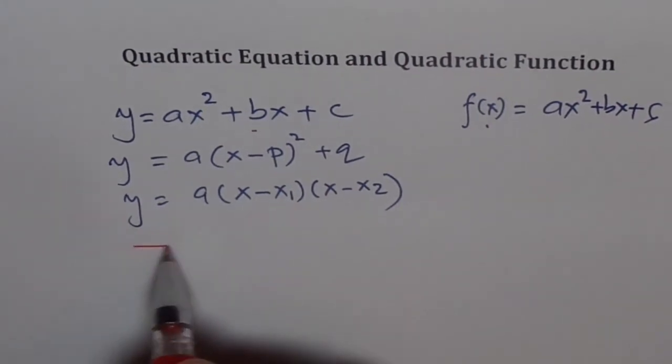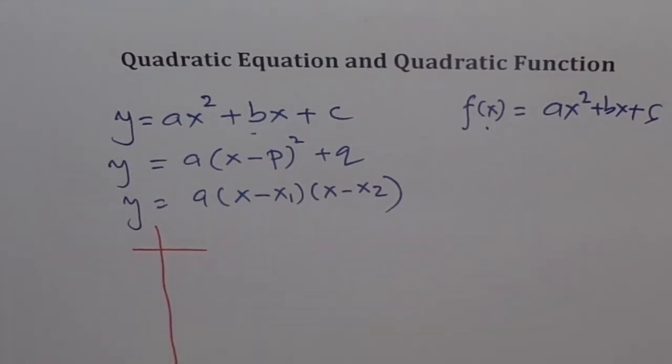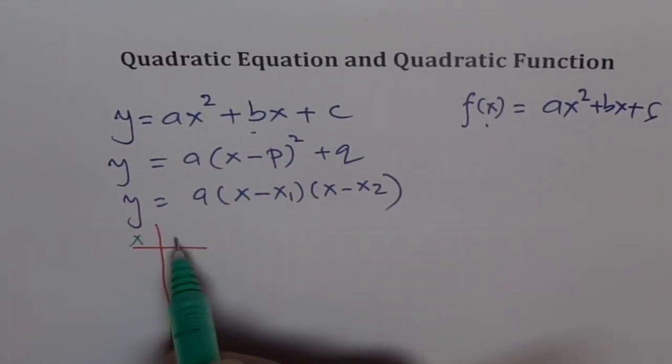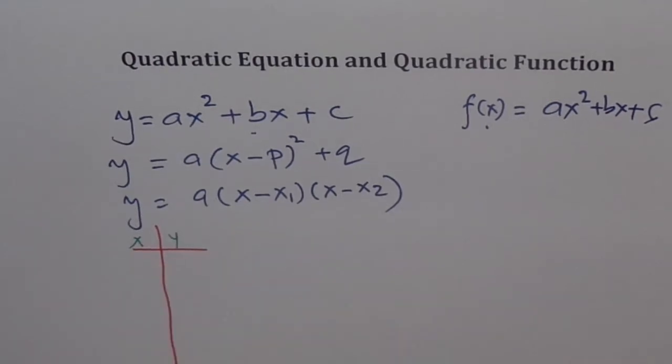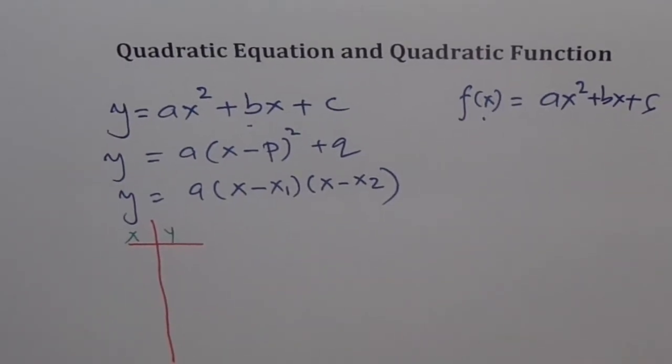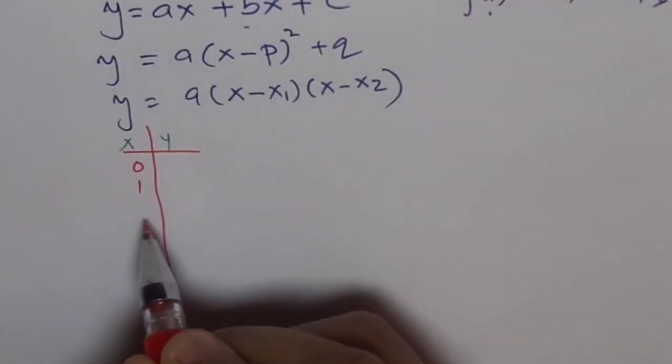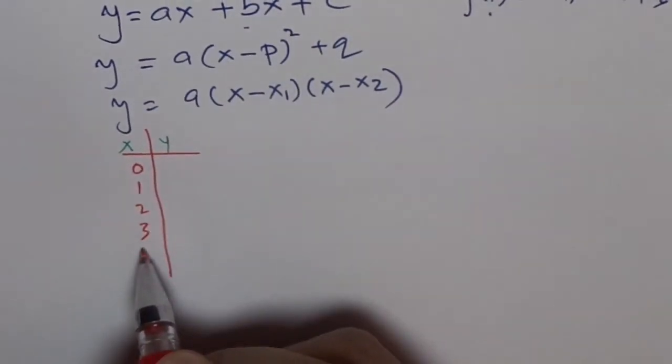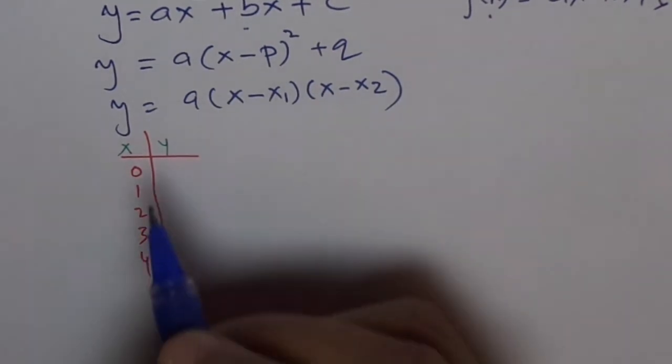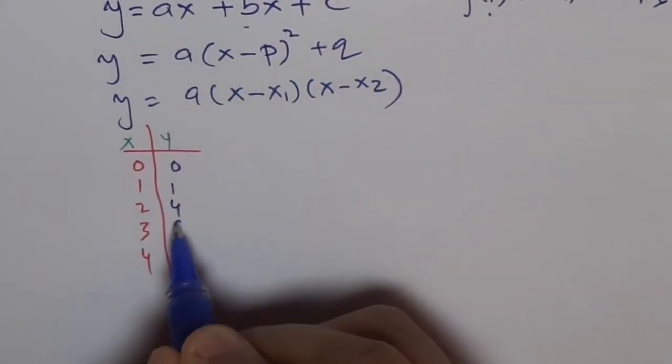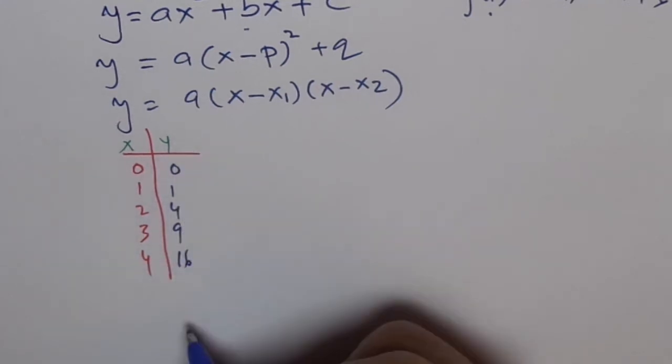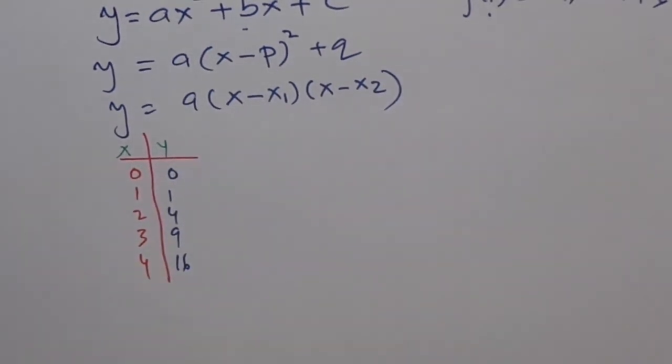So I can say, well here is my table of values and these are my x values and these are my y values. I can say for this data 0, 1, 2, 3, 4, something like this, I have 1, 4, 9, 16 and this data represents a quadratic function. So I can represent my quadratic function in so many different ways.